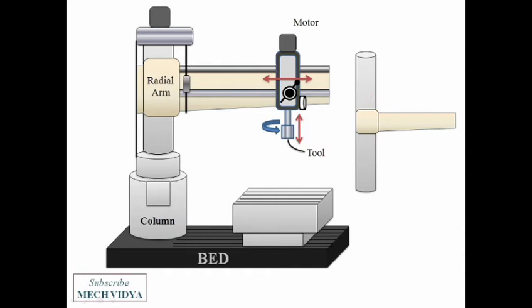First the radial arm can move or slide along the column and can be fixed at any position along the length of the column.